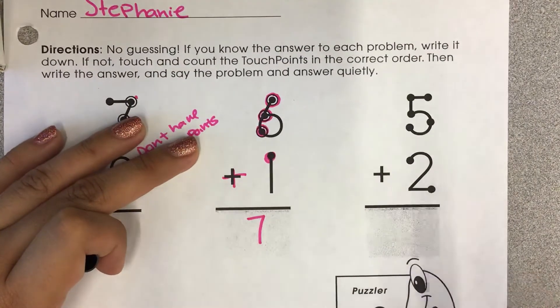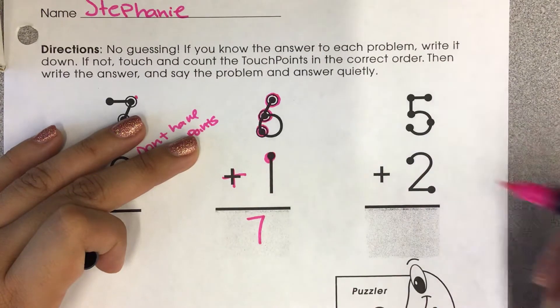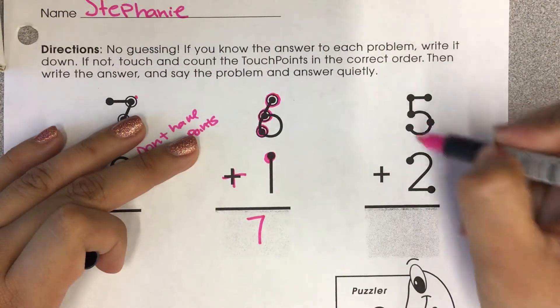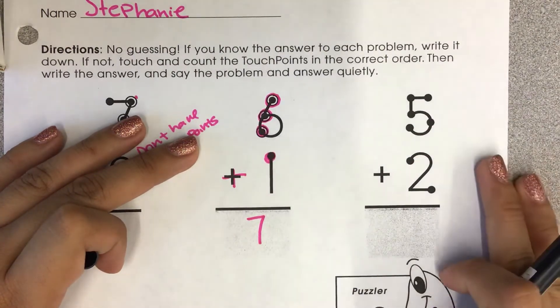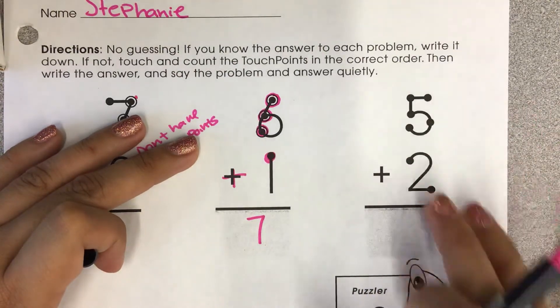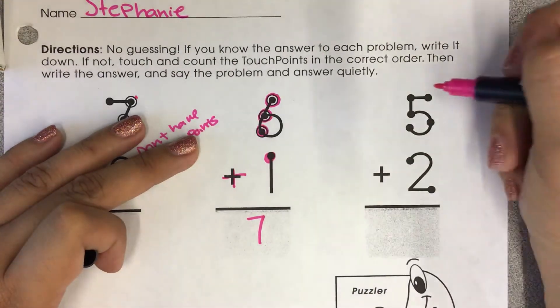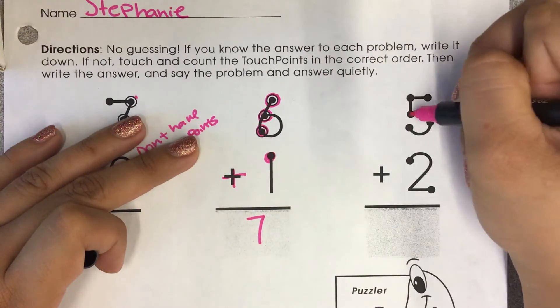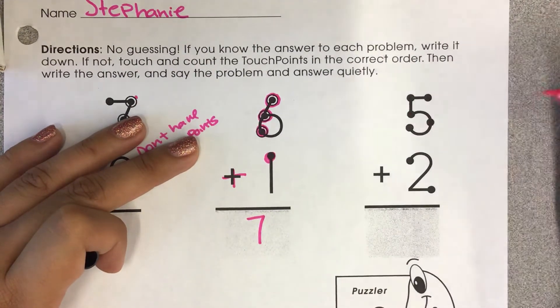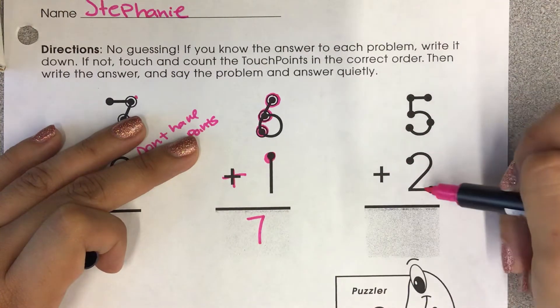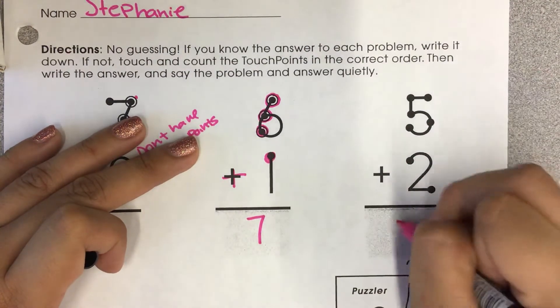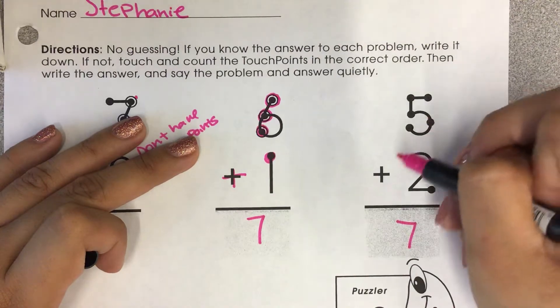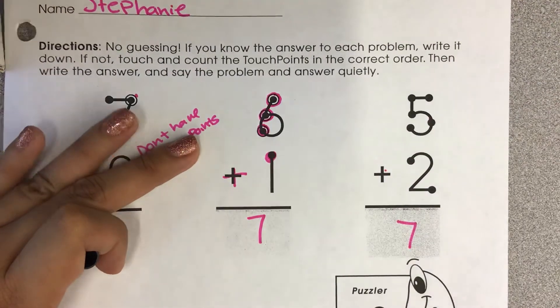Here in our next problem, we have 5 plus 2. Both numbers have their touch points. So we're going to go ahead and count them all together to get the answer. So count with me. 1, 2, 3, 4, 5, 6, 7. So the answer is 7. 5 plus 2 equals 7.